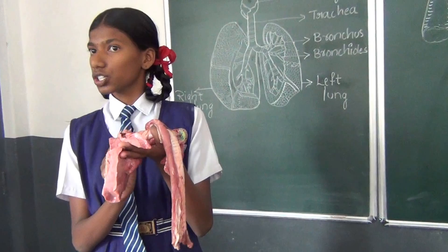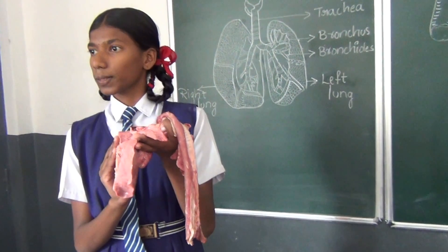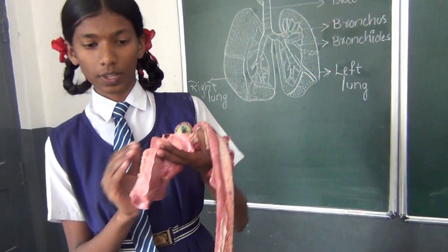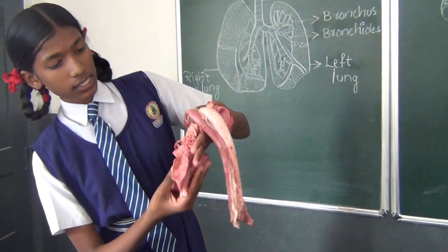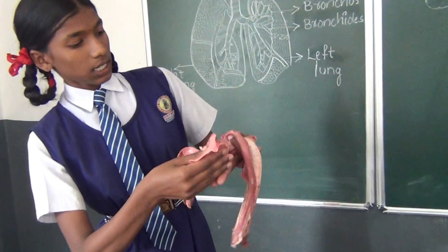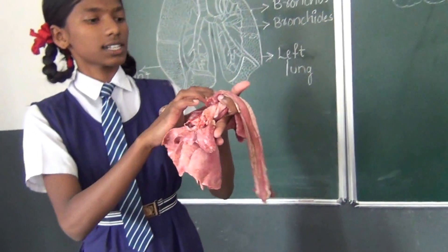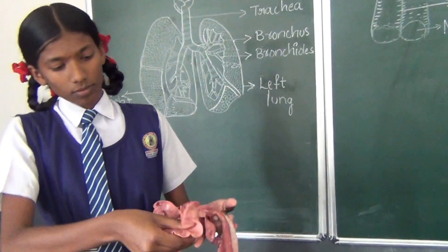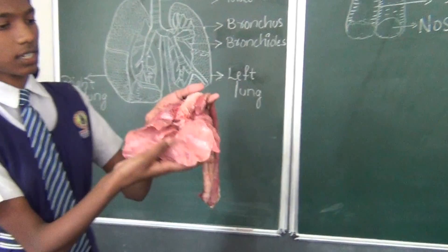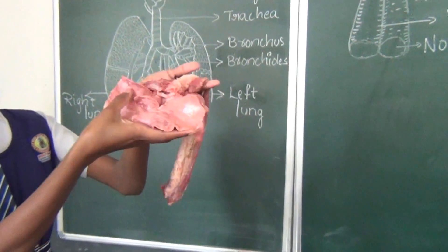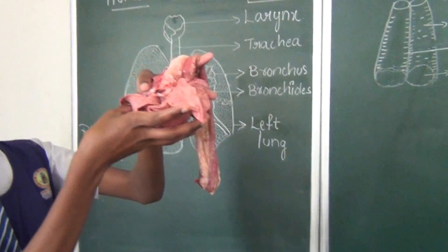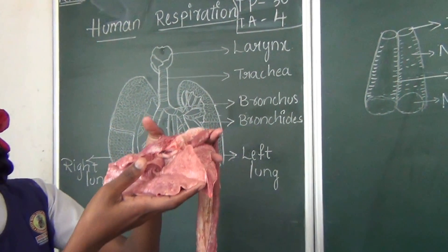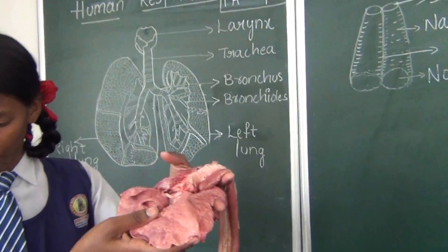What is the function of the pleura? To protect the lungs from any injuries. As we can see, the right lung is larger than the left lung.